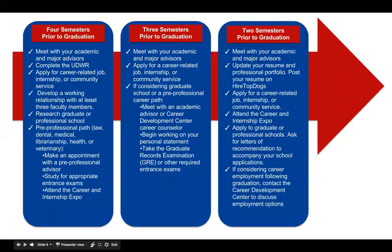Here we also have a graduation checklist prior to graduation. Four semesters prior to graduation: meet with your academic advisor to monitor your academic progress toward graduation. Be sure you are aware of the courses you still need to take and when they are offered — some courses are only offered in the fall or spring semester, so please plan accordingly. Complete the upper division writing skills requirement after 60 units and/or before 90 units. Apply for a career-related job, internship, or community service. Develop a working relationship with at least three faculty members, as these individuals will be invaluable when you need letters of recommendation. If considering graduate or professional school, begin researching possible schools. If considering a pre-professional path, make an appointment to meet with a pre-professional advisor and contact the University Advising Center for a current list. Study for appropriate entrance exams and attend the career and intern expo.